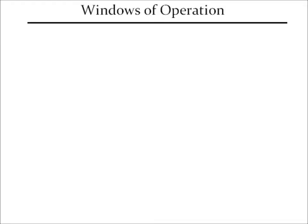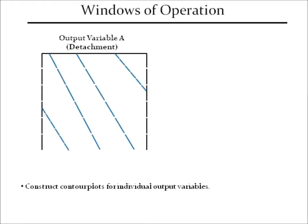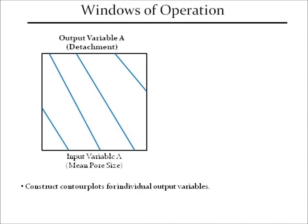Windows of operation plots are two-dimensional maps showing regions of feasible operating ranges. To identify a window of operation, firstly a contour plot for an output variable of interest, such as cell detachment, needs to be created with respect to the input variables of interest — in this study, pore size and shear stress.